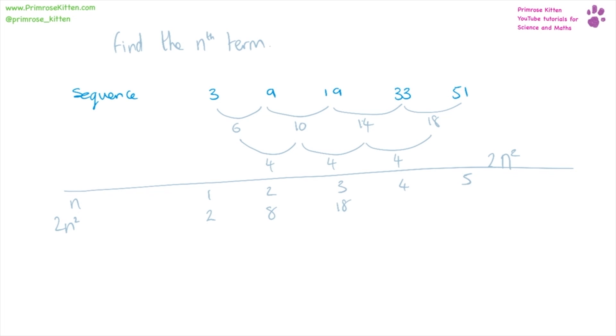4 squared is 16 times 2 gives us 32. 5 squared is 25 times 2 gives us 50.